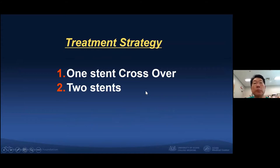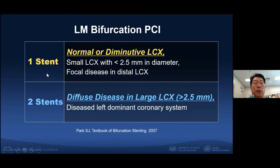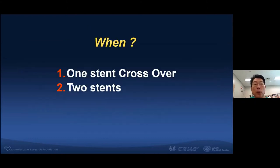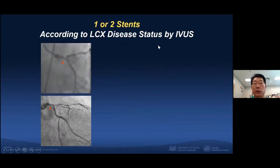Looking at the treatment strategy for the main bifurcation, we can simplify into one-stent crossover or two-stent technique. In case of a normal or diminutive circumflex, we prefer one-stent. For diffuse disease in a large circumflex more than 2.5 mm, we prefer two-stent. We choose one-stent or two-stent according to the circumflex disease status by IVUS.